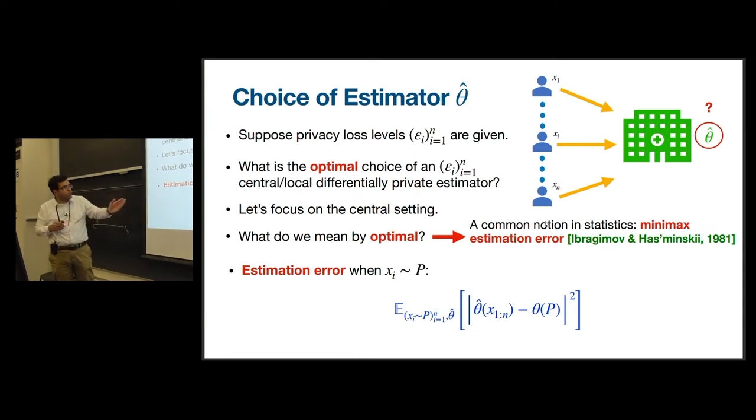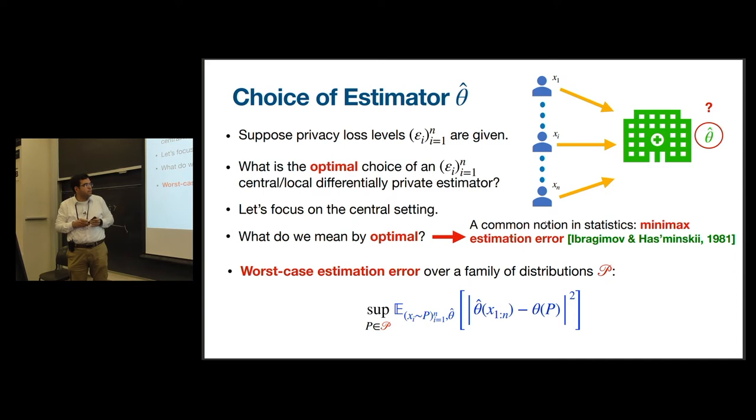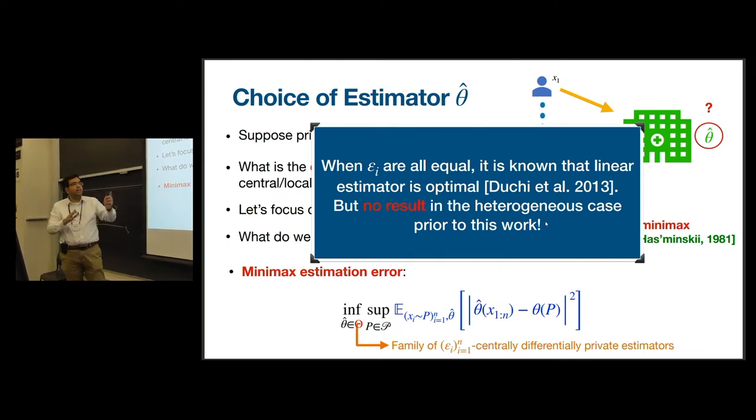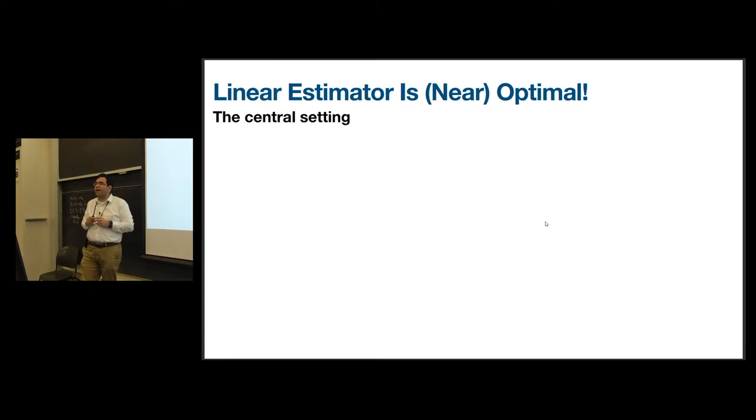The estimation error is simply the mean square error, the L2 norm squared of the difference between the estimator theta hat and the true mean theta corresponding to the distribution p. Let's say this distribution p is coming from a family of distribution calligraphic P. I take the supremum over the whole family, and this will be my worst case estimation error. When I say an estimator is optimal with respect to the minimax estimation error, I find that estimator that satisfies this epsilon 1 to epsilon n centrally differentially private constraint and at the same time minimizes this worst-case estimation error. This question has been answered in the literature for the case that epsilon n is equal, and we know that linear estimator is optimal. But there has been no result for the heterogeneous setting prior to this one.